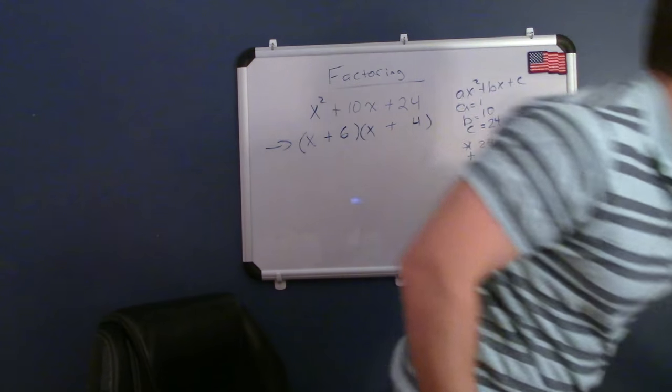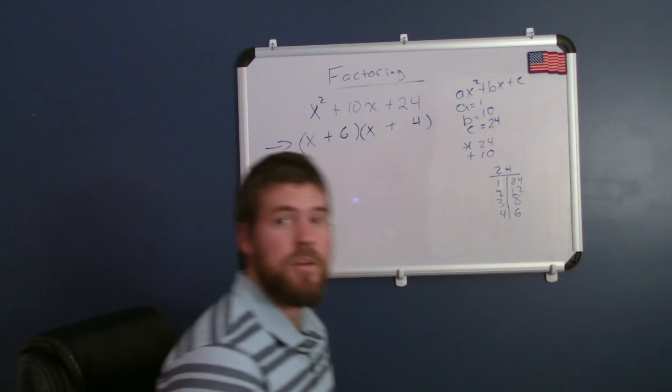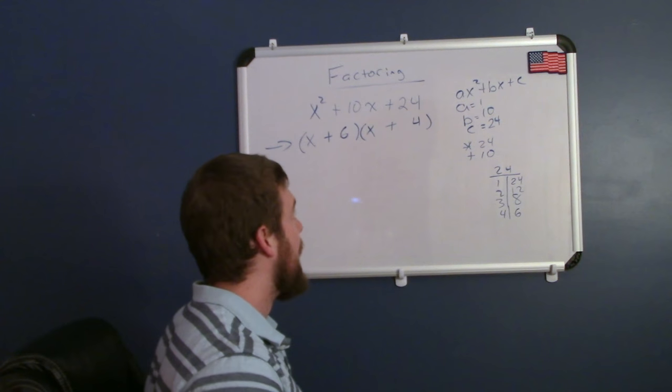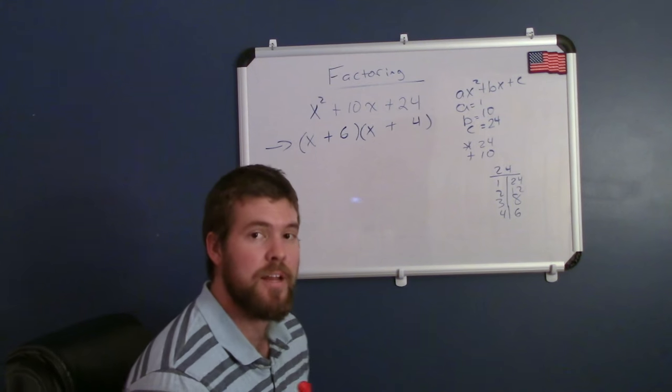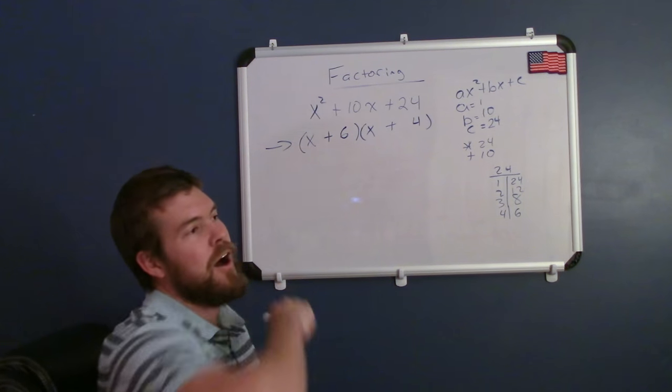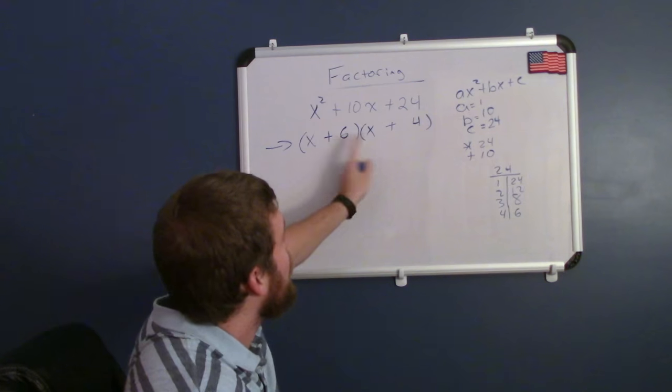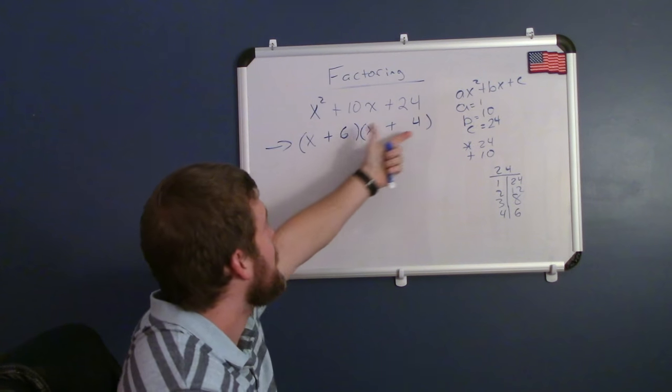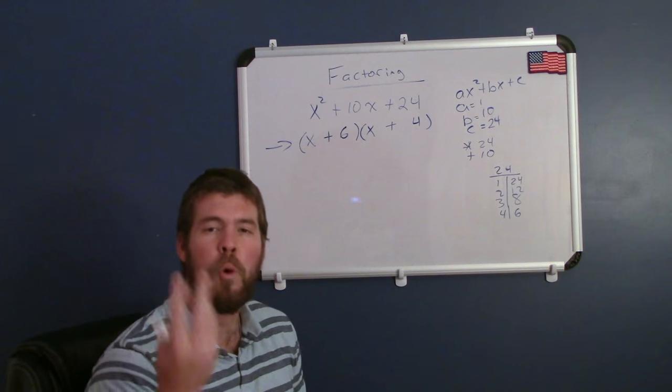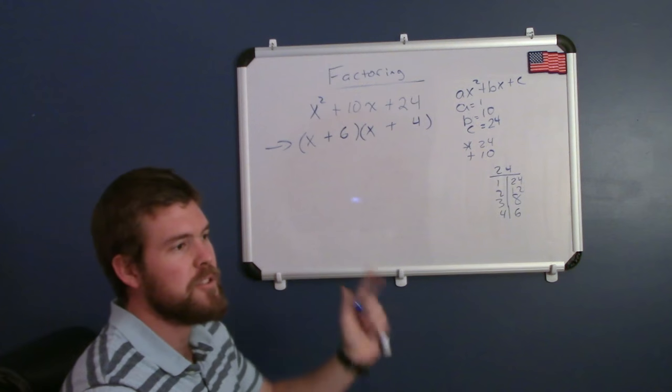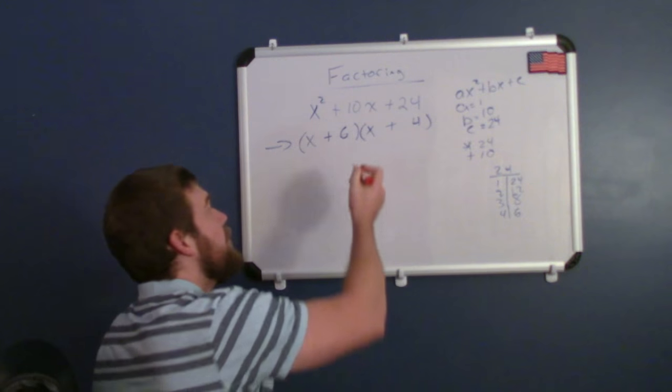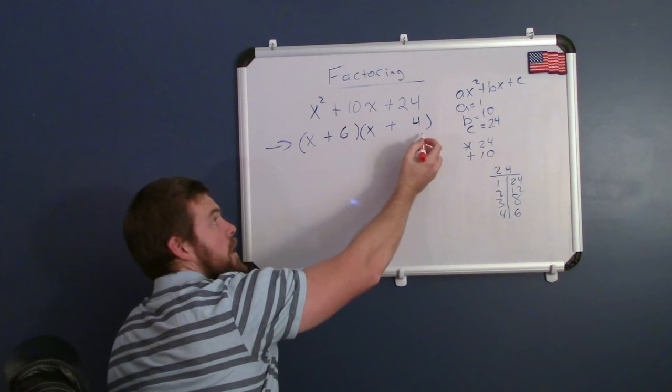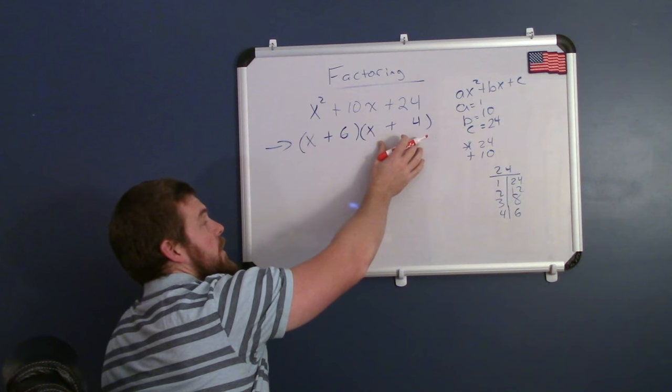Now if we wanted to check our answer, we would want to multiply it back out. That's one thing that's great about factoring—you can always check your answer by distributing all parts, multiplying these two parts together. You've heard the term FOIL probably, that is used a lot: first, outer, inner, last. But the way I see it is just every part here has to multiply to every part on this side, and this parenthesis to this parenthesis.